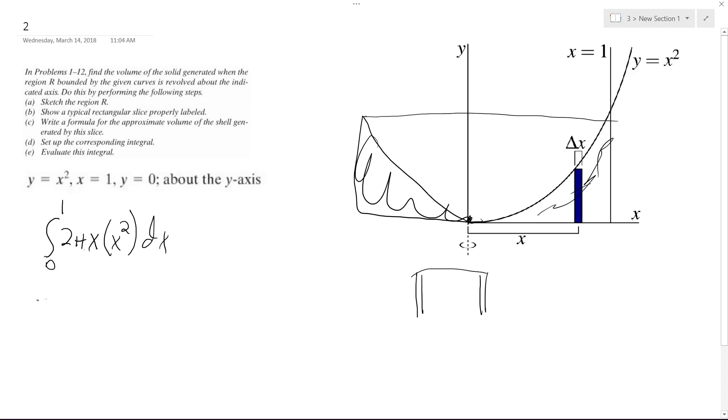So when we integrate this, before we integrate, we're going to have two pi from zero to one, and then we're going to have x cubed. And then dx integrated, so two pi, and then this becomes x to the fourth over four from zero to one.